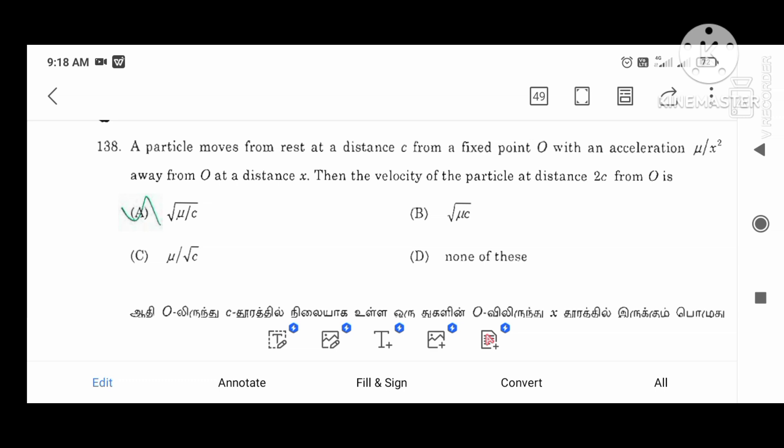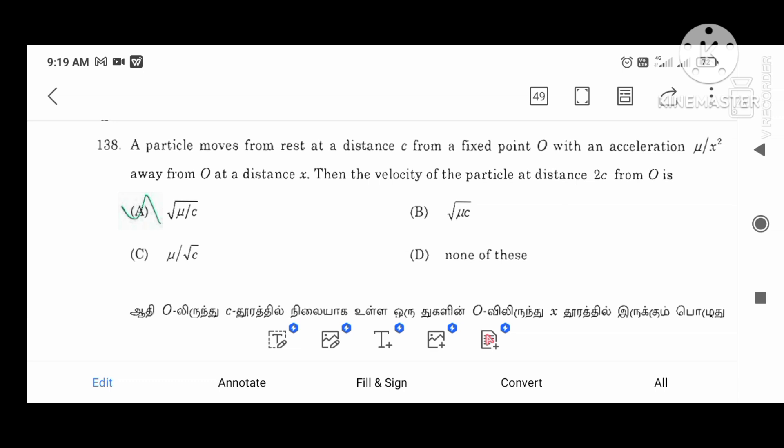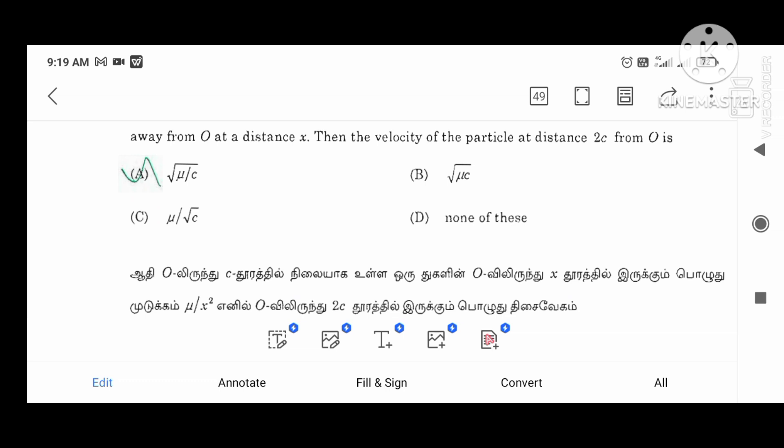First, we will talk about the particle moves from here. We will talk about the results and the name of the statement and theorem. The first test: the particle moves from the distance C from fixed point O with acceleration. The distance is the velocity of the particle at distance 2C from O. If you have the result of root of mu divided by C.